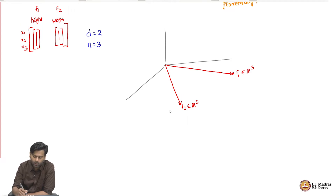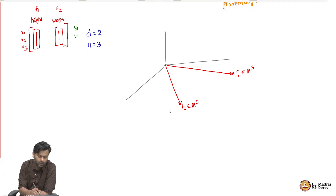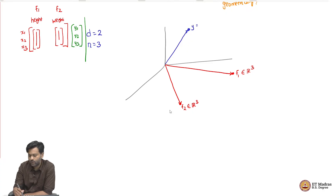I also have the labels: Y1, Y2, Y3 — one label for each data point — which is also a three-dimensional vector. This means I can plot my Y here in the same 3D space. Maybe my Y is sitting somewhere here; it is also in R³.